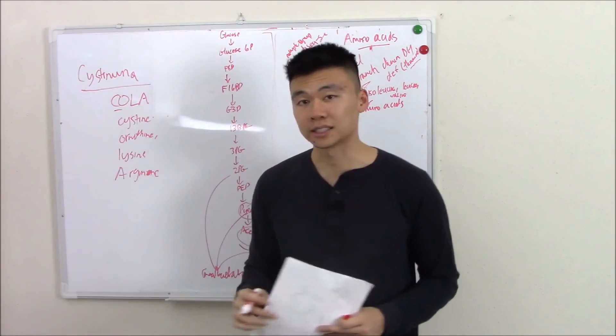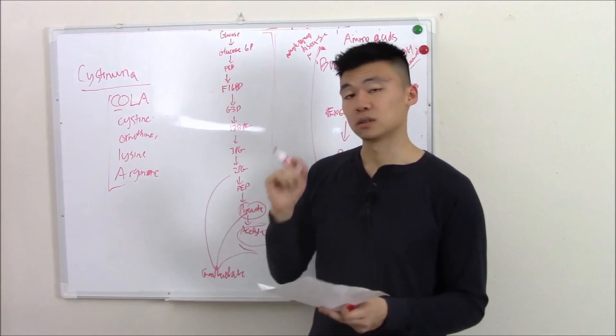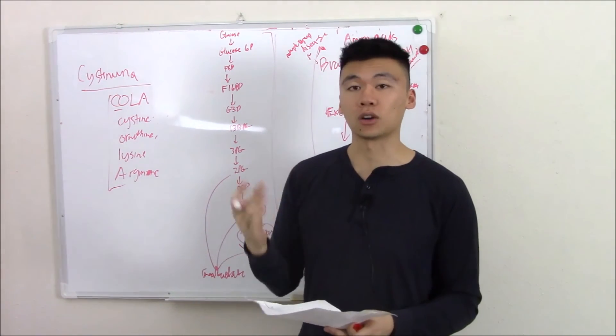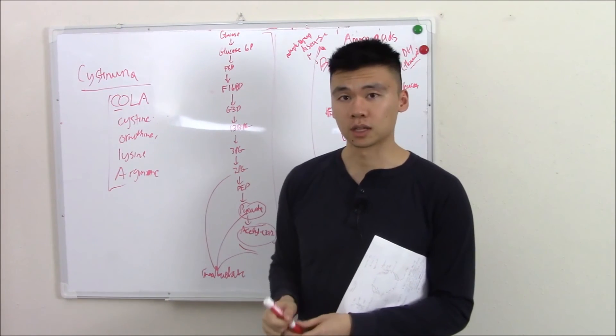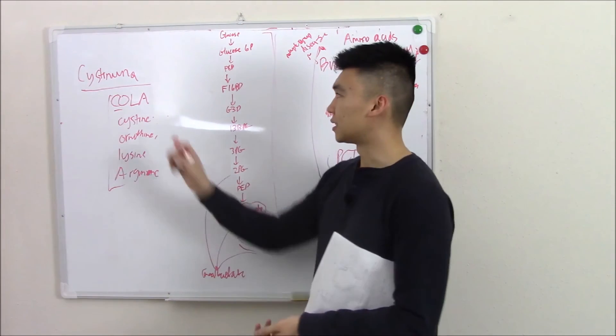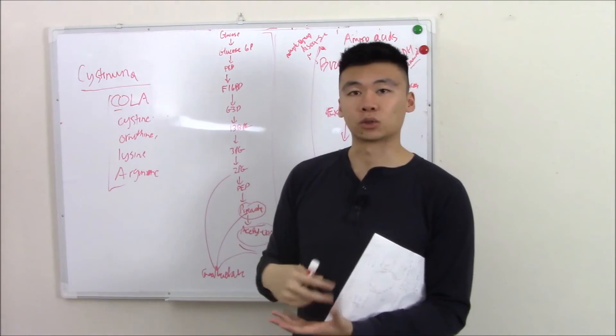Why is it called cystinuria if it has four amino acids? Well, cysteine is the least soluble. So this is the one that precipitates in your urine, and this is the one that gives you problems. We talked about cystinuria in our renal block.